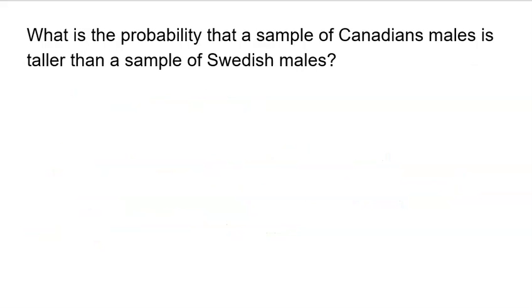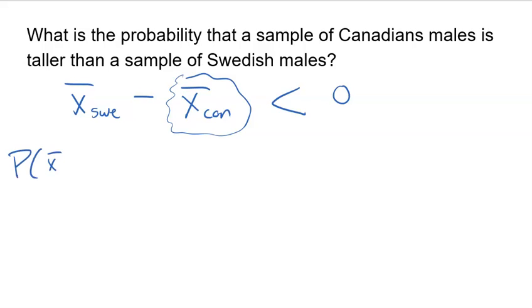One more question here. This is the question I kind of alluded to earlier. What is the probability that a sample of Canadian males is taller than a sample of Swedish males? I built my entire model on the idea of looking at the Swedish mean minus the Canadian mean. So I have to understand that if I'm looking for the Canadian mean to be bigger, that means I'm looking for a difference to be less than zero. Because if I'm less than zero, the only way that can happen is if the Canadian sample was bigger.